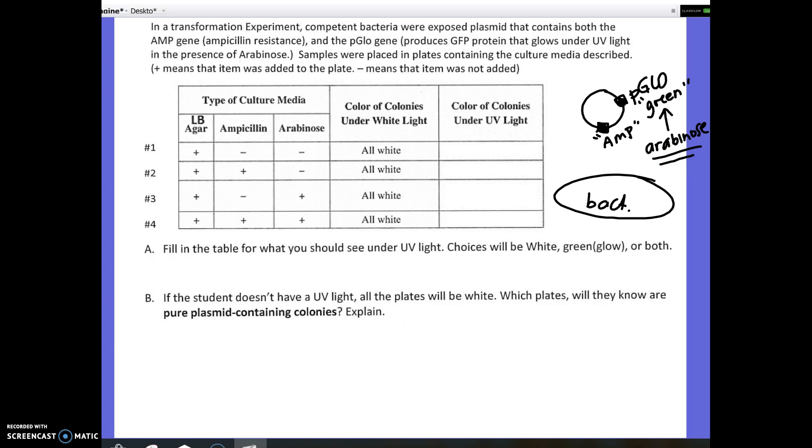Okay, so when we put our bacteria through our transformation process, we're going to have a whole bunch of bacteria. Some of them are going to pick up the plasmid, and some are not. And so, this is the whole idea, is that we're growing them in these different plates. So, plate number one has LB agar. LB, remember, is luria broth. That's just food. There's no ampicillin, and there's no arabinose. So, what will grow on this plate? Basically, everything will grow on this plate. There's nothing to kill the bacteria that didn't pick up the plasmid. And, what color will they be? They will all be white. Why? Because, since there's no arabinose on the plate, and this is the trigger for them to glow, even if they picked up the plasmid, the gene is not activated, and so they'll just be white.